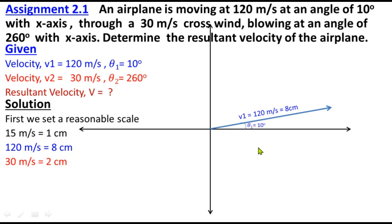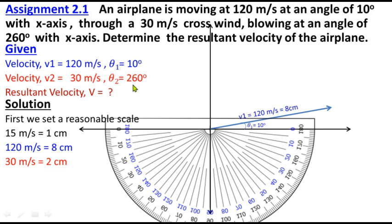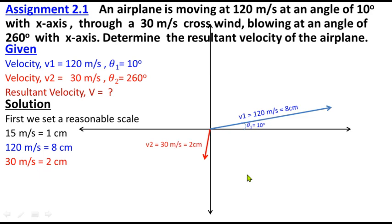In the next step, we draw the other angle. Using the protractor at 260 degrees, we put a line and the line is how long? 2 centimeters. Now we note this: 30 meters per second, 2 centimeters, and the angle is 260 degrees.